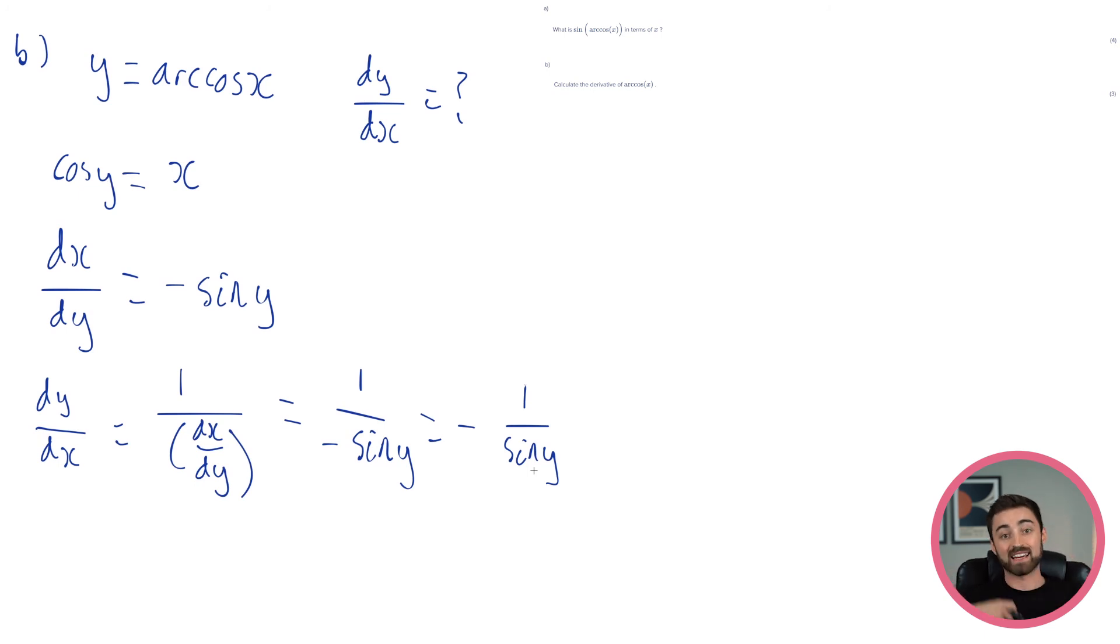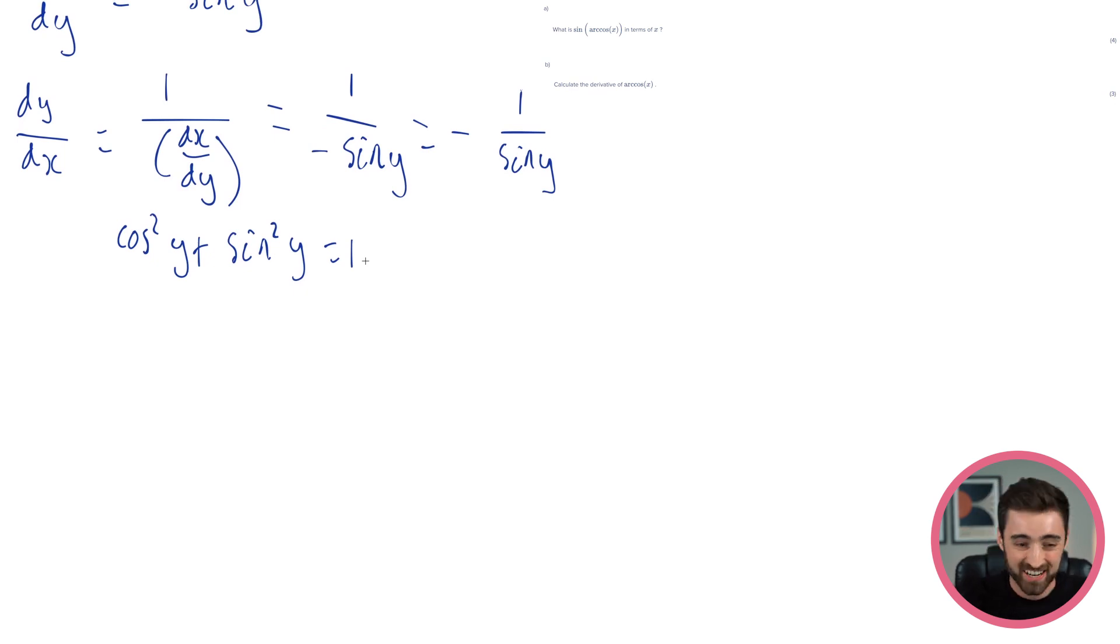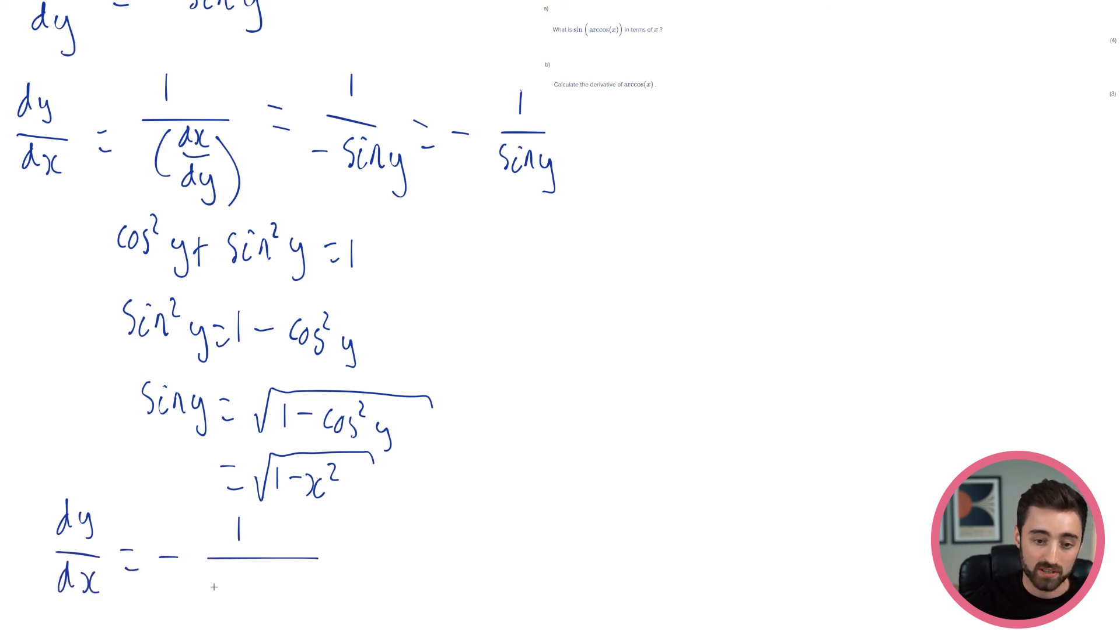Kind of similar to the last one, but there is a trick here, and I'm going to use an identity. If we know that cos squared y plus sine squared y equals 1, what I can actually do is just rearrange this for sine y, because then that's going to be in terms of cos y, which happens to be x, right? So, I'm going to take cos squared from both sides to get 1 minus cos squared y, and then I'm going to square root both sides to get sine y equals the square root of 1 minus cos squared y. Why is this useful? Because cos y is x. So, look at this. I've got my thing exactly in terms of x here. So, this is my answer. dy by dx is going to equal minus 1 over the square root of 1 minus x squared.